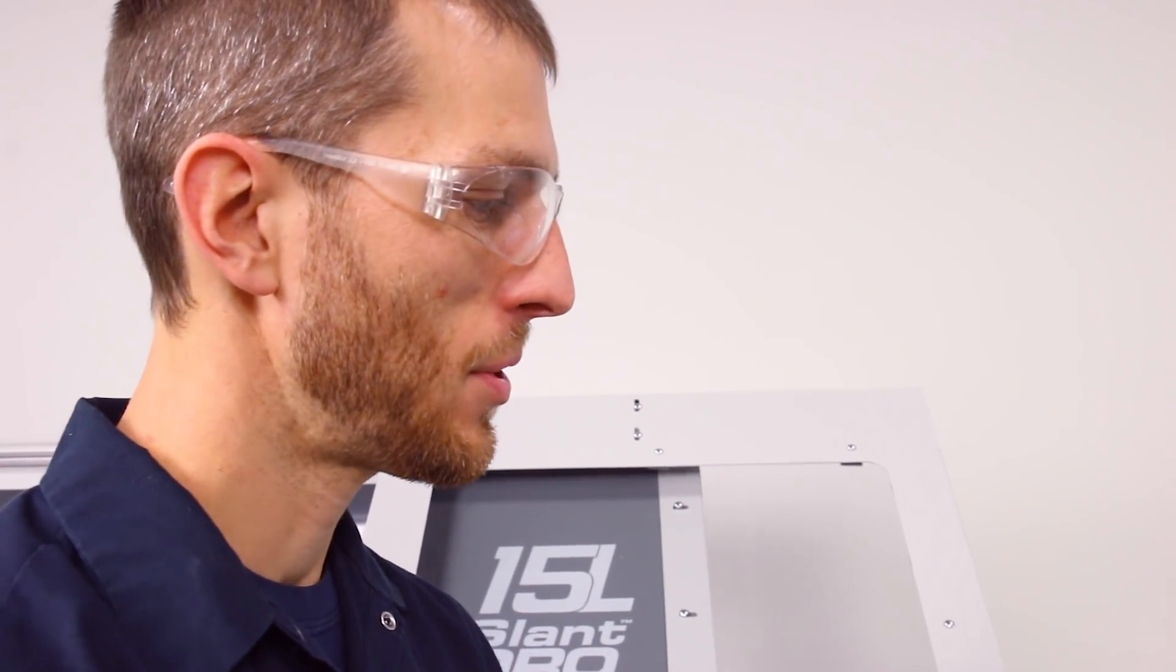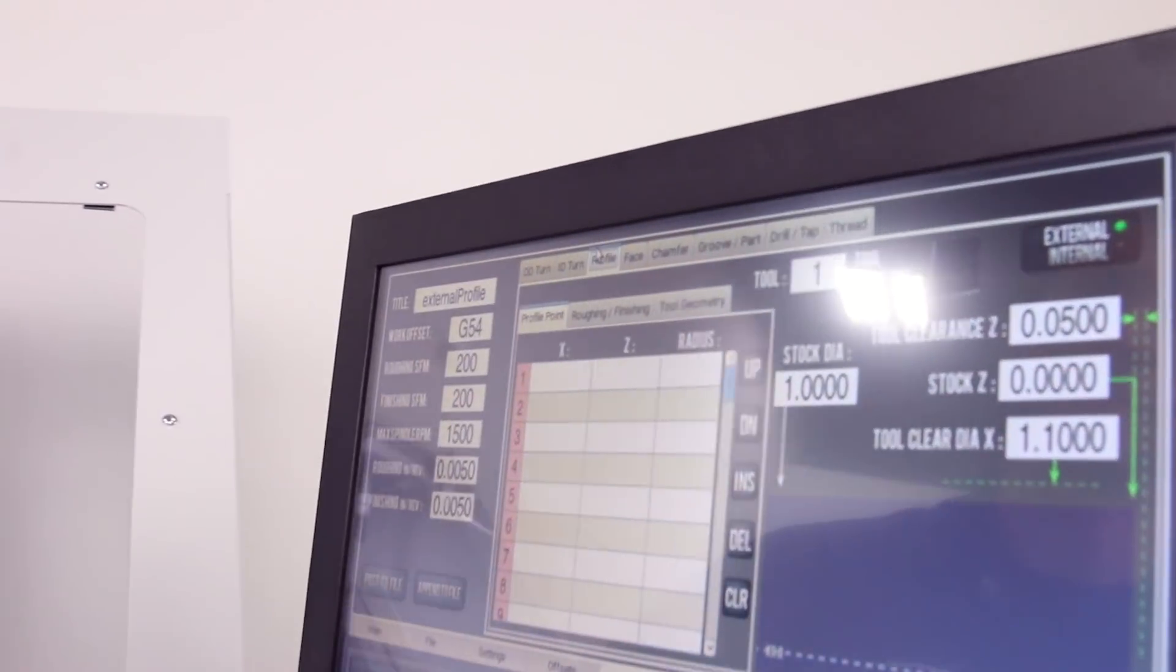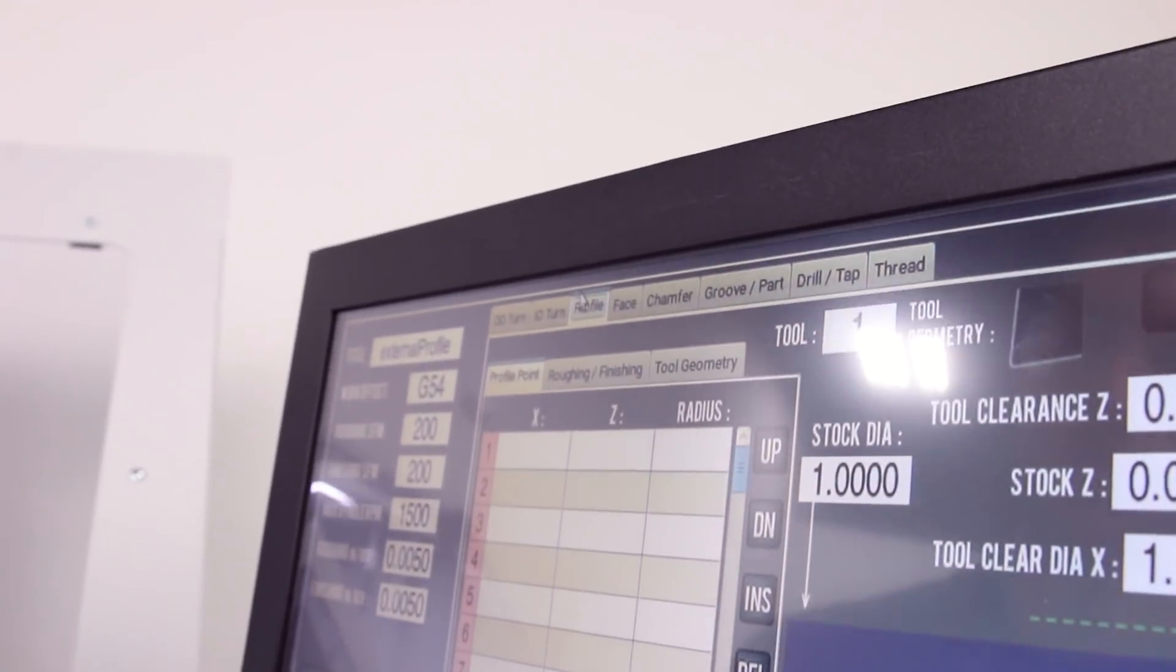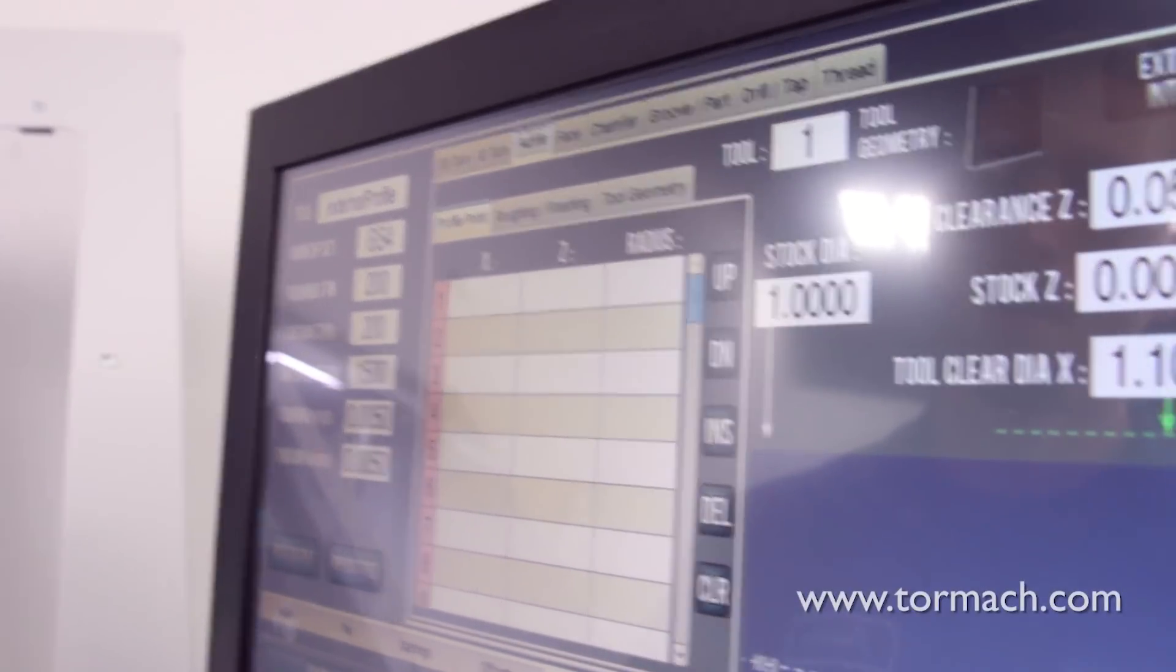Alright, so we're on PathPilot 2.0. We're in the conversational tab. We're going to go to profiling. In this toolpath strategy we can create our geometry point-to-point. So we're just going to put in some parameters here. We're actually just going to kind of doodle. We're just going to create this geometry as we go. It's really one of my favorite things to do on the lathe. It's just fun to walk over here and just put in a bunch of numbers, make something that looks cool and to run it.